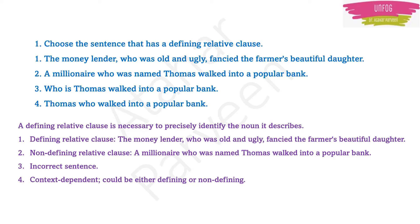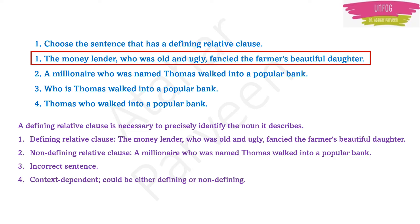A non-defining relative clause is shown in option 2: 'A millionaire who was named Thomas walked into a popular bank.' They are not precisely describing Thomas — just telling he is a millionaire, his name is Thomas, and he walked into a bank. Option 3 — 'Who is Thomas walked into a popular bank?' — is an incorrect sentence. Option 4 — 'Thomas, who walked into a popular bank?' — is an incomplete, context-dependent sentence. Therefore, option 1 is the correct answer.